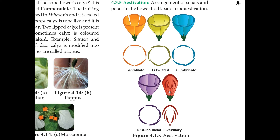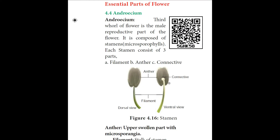The last type of aestivation is vexillary aestivation — a type of imbricate aestivation in which a large posterior petal overlaps the two lateral petals on both their margins; the lateral petals in turn overlap both the anterior petals. Example: pea and bean.